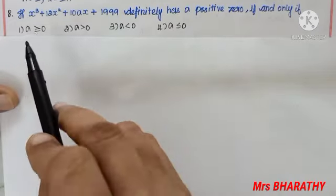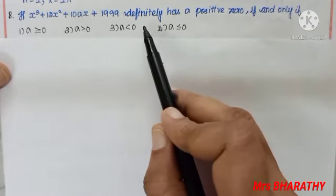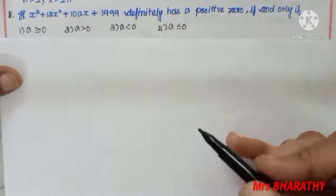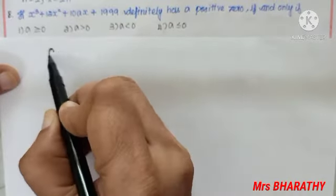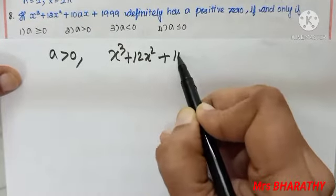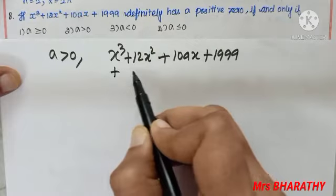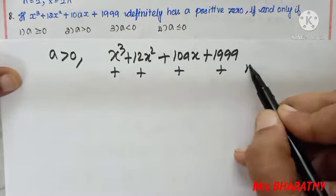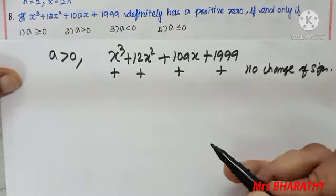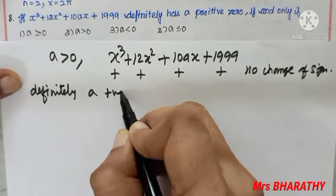Question number 8: if x³ + 12x² + 10ax + 1999 definitely has a positive zero, which condition must hold? Suppose a > 0: the signs are +, +, +, + — no change of sign, so we cannot confirm a positive zero.